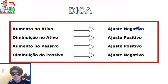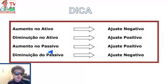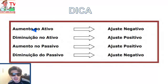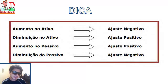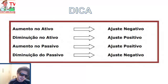Uma grande dica é essa tabelinha. Se aumentar o ativo, você faz um ajuste negativo no fluxo de caixa. Se diminuir o ativo, faz um ajuste positivo. Por exemplo: você comprou mercadorias, aumentou o estoque no ativo — no fluxo de caixa o ajuste é negativo, porque saiu dinheiro do caixa para comprar estoque. Se você vendeu a mercadoria, entra dinheiro no caixa, então o ajuste é positivo.